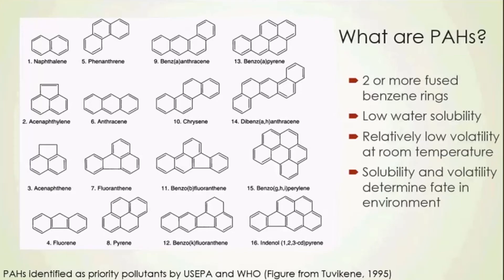A little background on PAHs: they are a class of hydrocarbon compound characterized by having two or more fused benzene rings. In general, the class has low water solubility and low volatility at room temperature, but smaller PAHs are more soluble and more volatile relative to larger PAHs. These properties of solubility and volatility ultimately dictate how these compounds move and behave in the environment following a spill. These ring structures can also have carbon substituents — one to four carbon units — attached to them, and we call these alkylated PAHs.